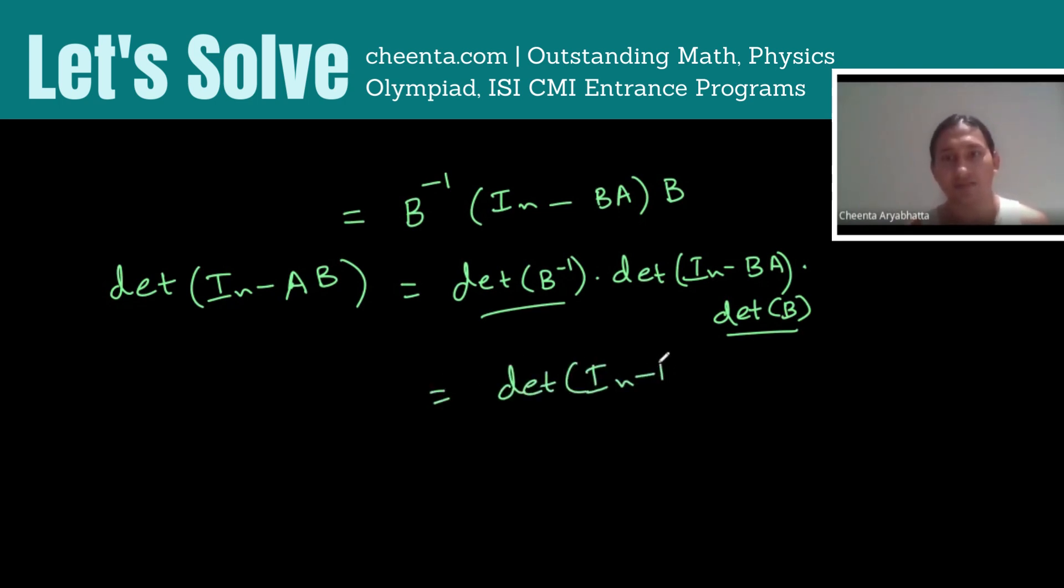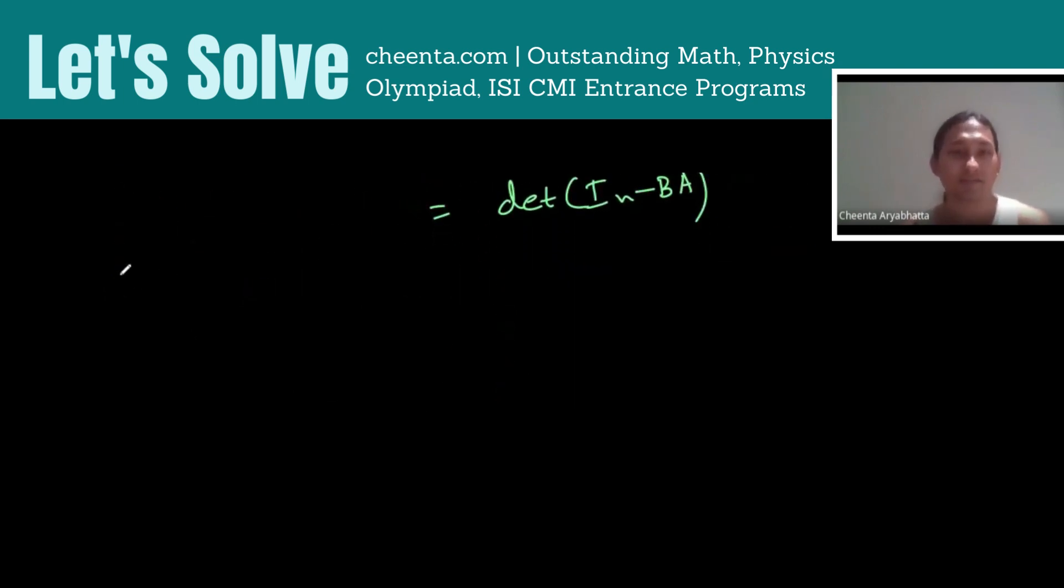And what happens when neither is invertible? Then I do something like this. Suppose BX is XIN plus B where X is a real number.